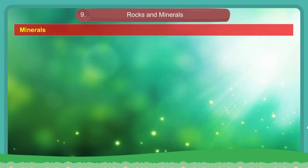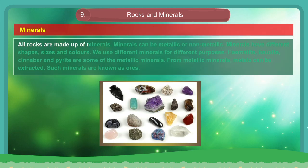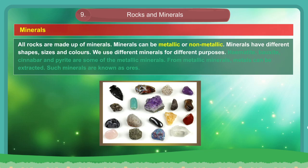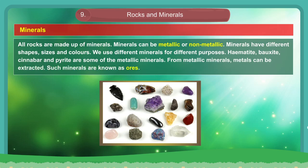Minerals. All rocks are made up of minerals. Minerals are called metallic or non-metallic. Minerals have different shapes, sizes and colors. We use different minerals for different purposes. Hematite, bauxite, cinnabar and pyrite are some of the metallic minerals. From metallic minerals, metal can be extracted. Such minerals are known as ores.